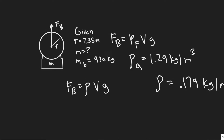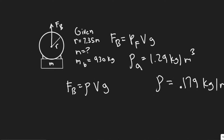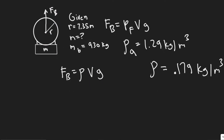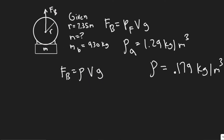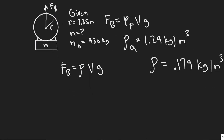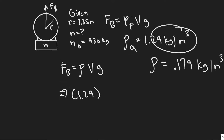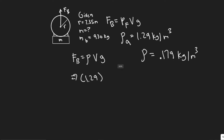Where rho is the density of the surrounding fluid — in this case, the fluid is just air. So the density of air multiplied by the volume of our balloon times g, the acceleration due to gravity. The density of air is 1.29 kilograms per meter cubed.